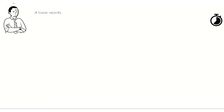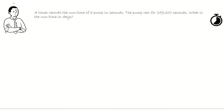A timer records the run time of a pump in seconds. The pump ran for 259,200 seconds. What is the run time in days?